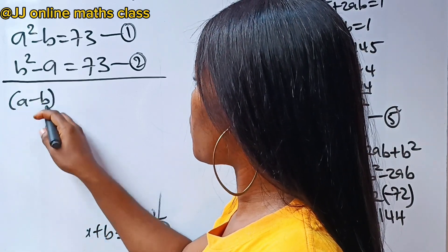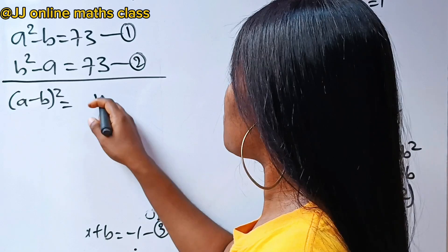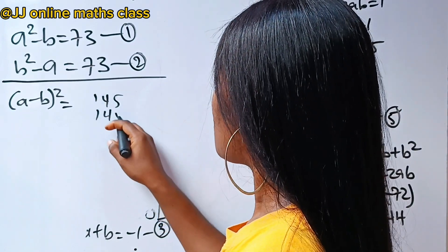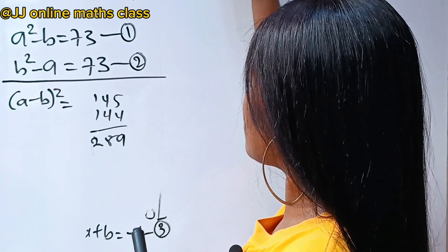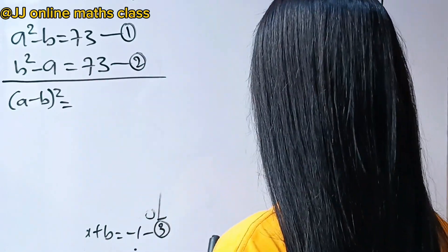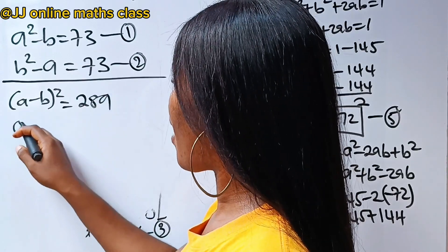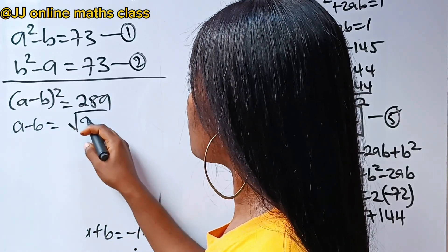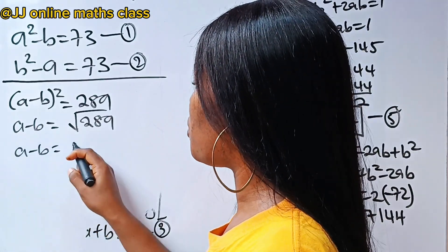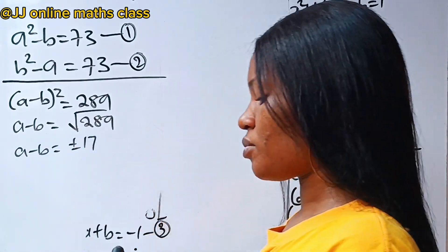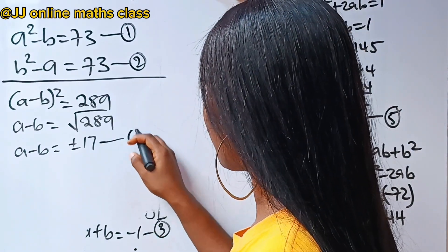So a minus b squared equals 145 plus 144, which is 289. Therefore a minus b equals the square root of 289, so a minus b equals plus or minus 17. Let's call this equation 6.